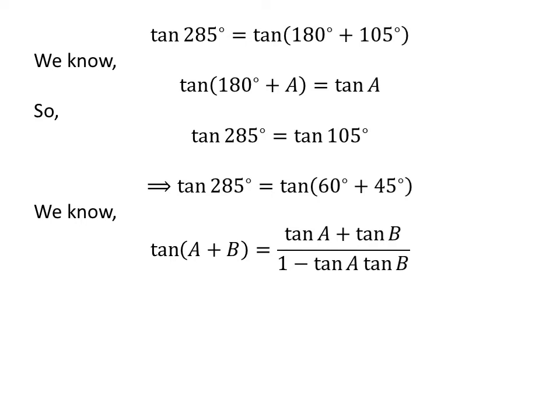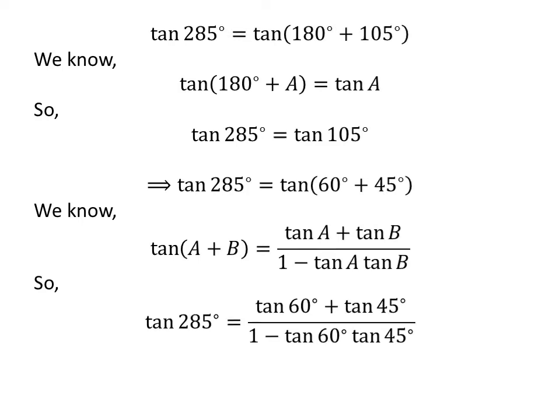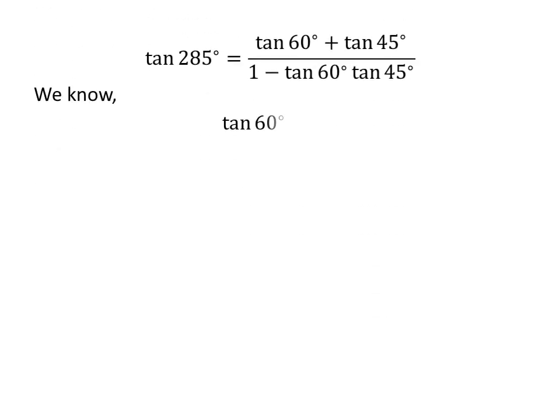The proof of this trigonometry identity is explained in the video appearing in the upper right corner, and the link is also given in the description section. Applying the above identity gives us tangent of 285 degrees is equal to tangent of 60 degrees plus tangent of 45 degrees upon 1 minus tangent of 60 degrees times tangent of 45 degrees. As we know, tangent of 60 degrees is equal to square root of 3 and tangent of 45 degrees is equal to 1.